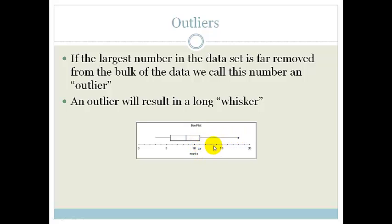This here is about 11, and that there is, it looks like 18. So that is quite far away. We call that an outlier. An outlier results in a long whisker.